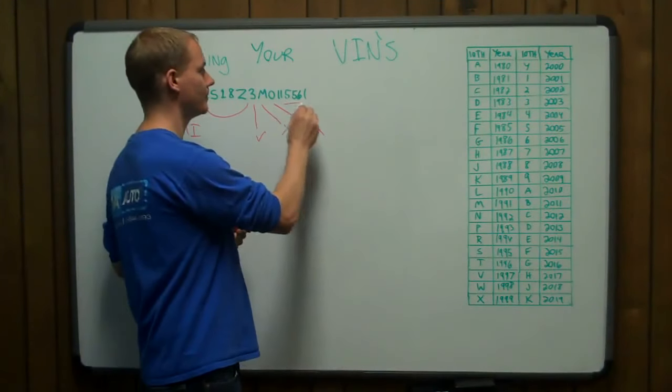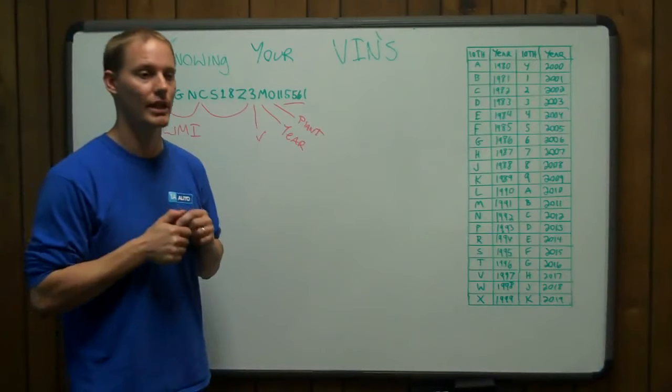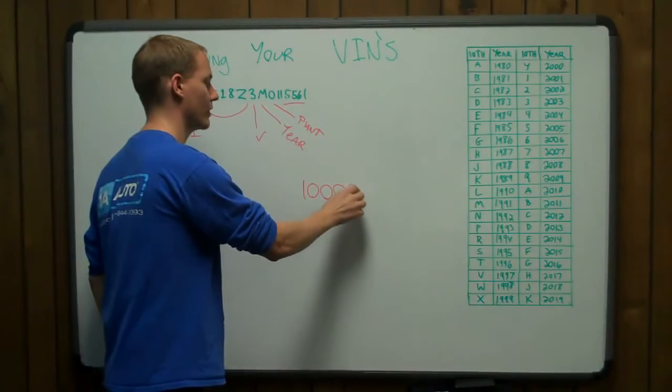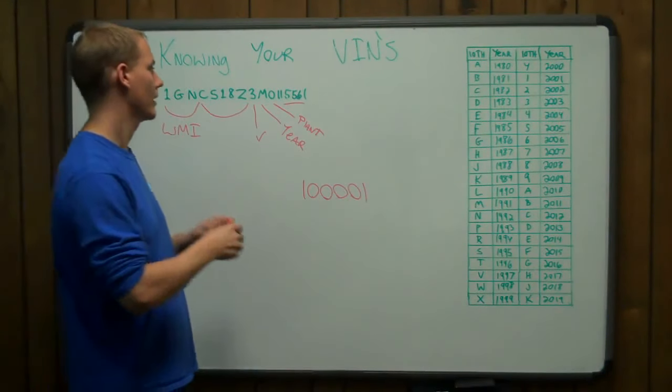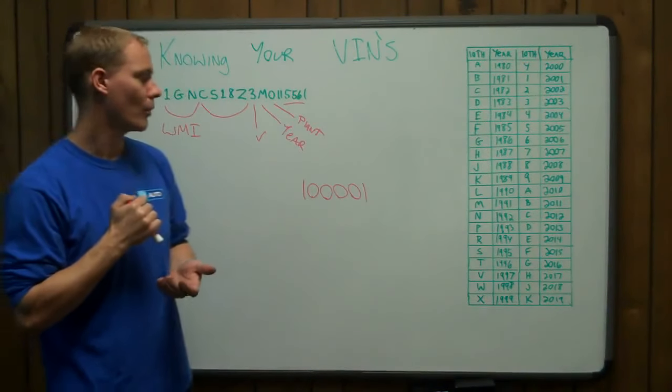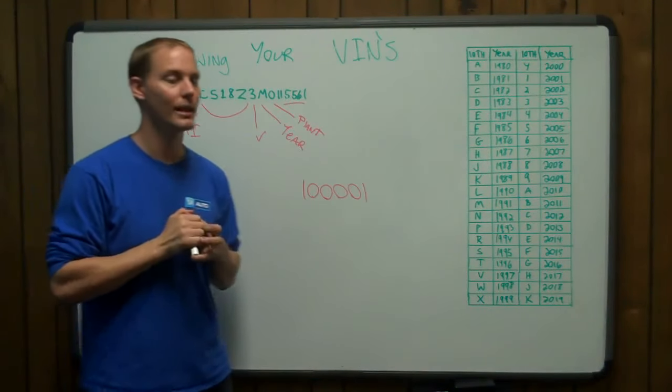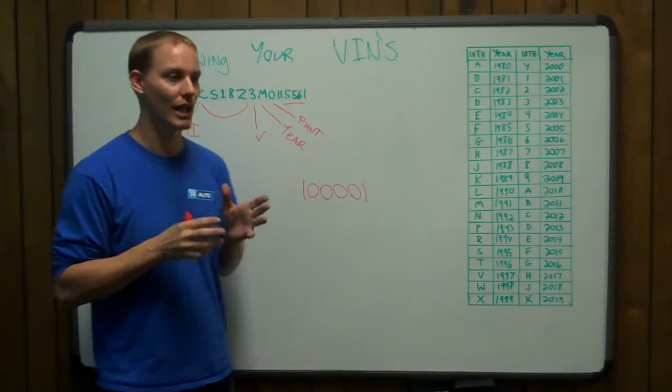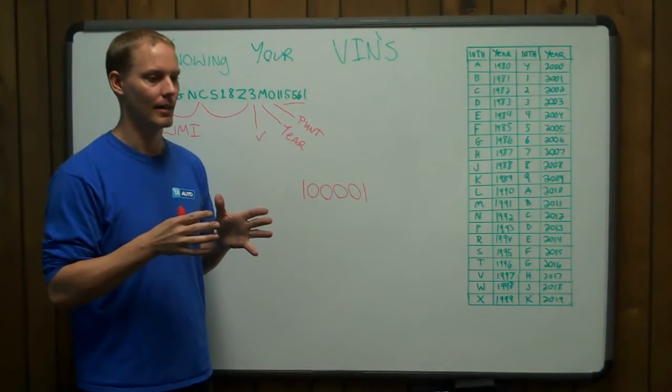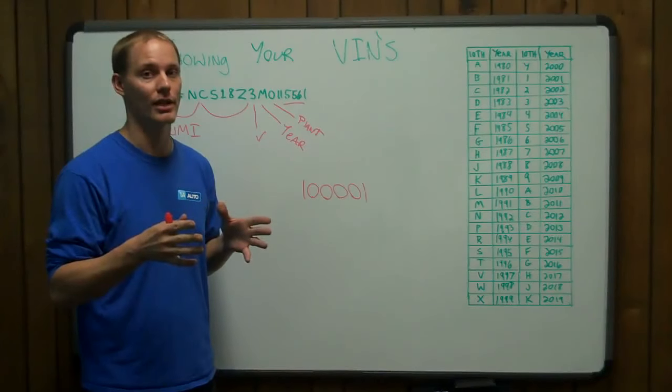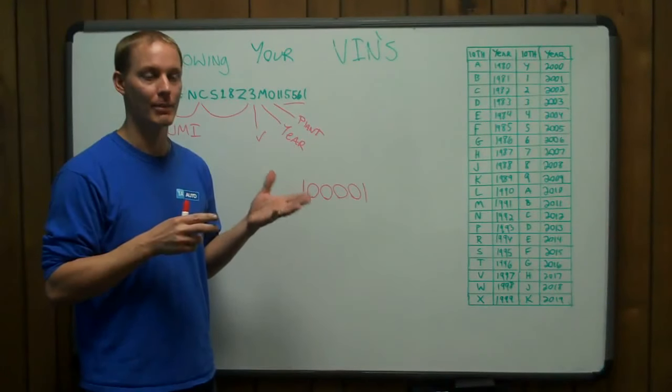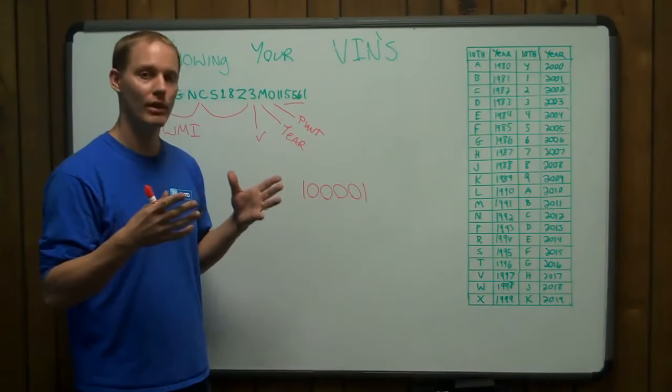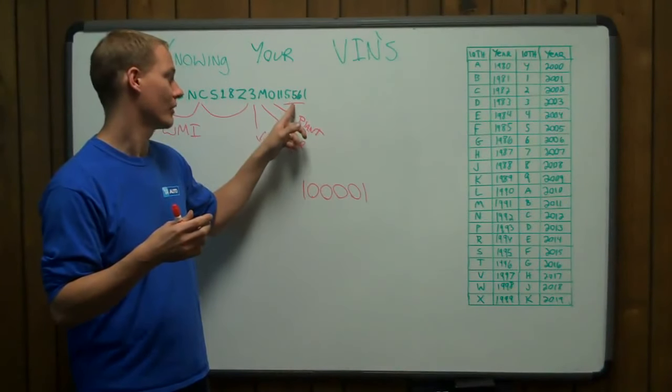The last six digits right here are the production line numbers. So most manufacturers, most vehicle manufacturers, start with the number 1, 0, 0, 0, 1. And that's what they start with, with the last six digits. And they go up from there. This normally is not an important number as far as buying parts, unless you have one of those vehicles that changed production specifications like halfway through a production line. So you might have a vehicle that had different mirrors in April of 2004 than it did in August of 2004. So if you have one of those vehicles, you need to know this production number.